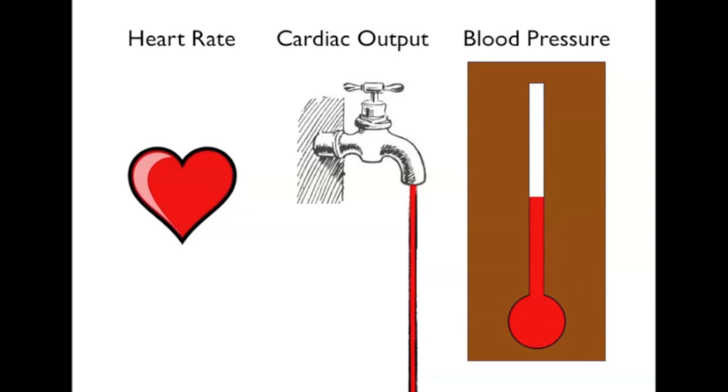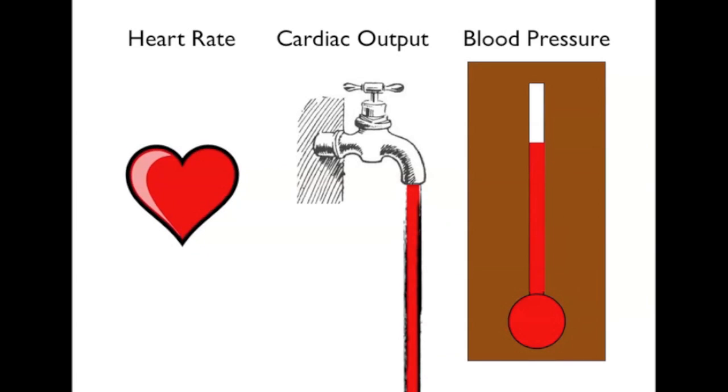Upon initial exposure to altitude, cardiac output, heart rate, venous tone, and blood pressure are all seen to rise due to increased sympathetic stimulation. As time progresses, the heart rate remains elevated while the stroke volume decreases due to: